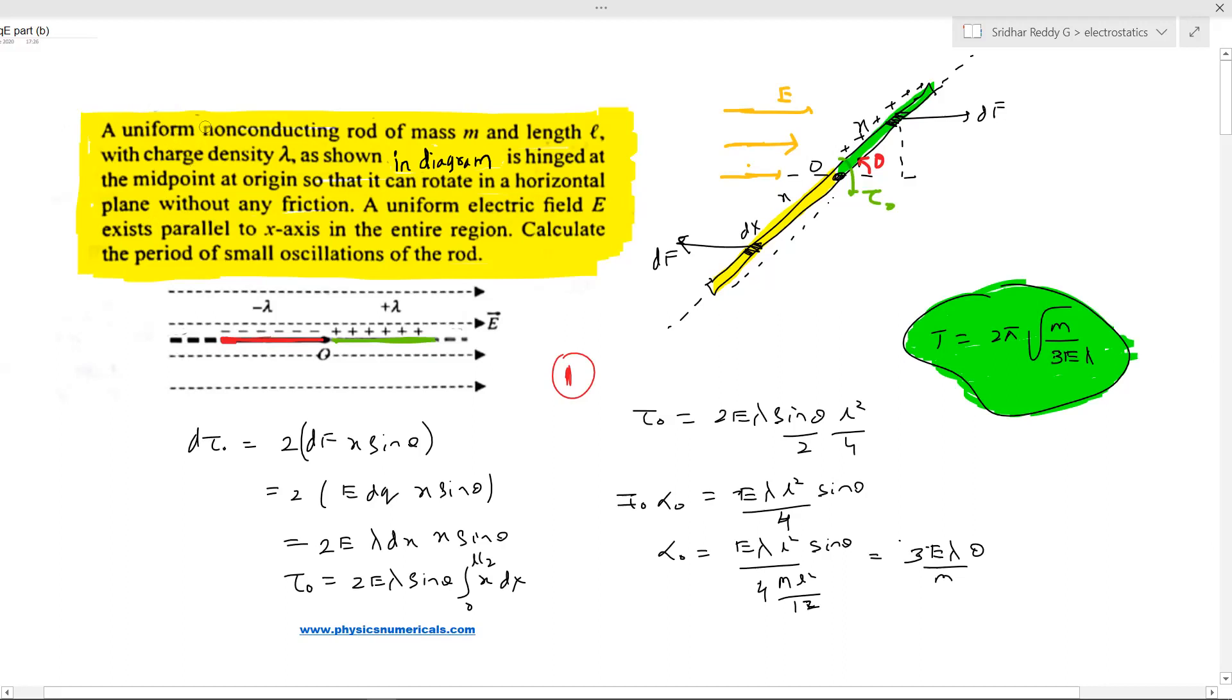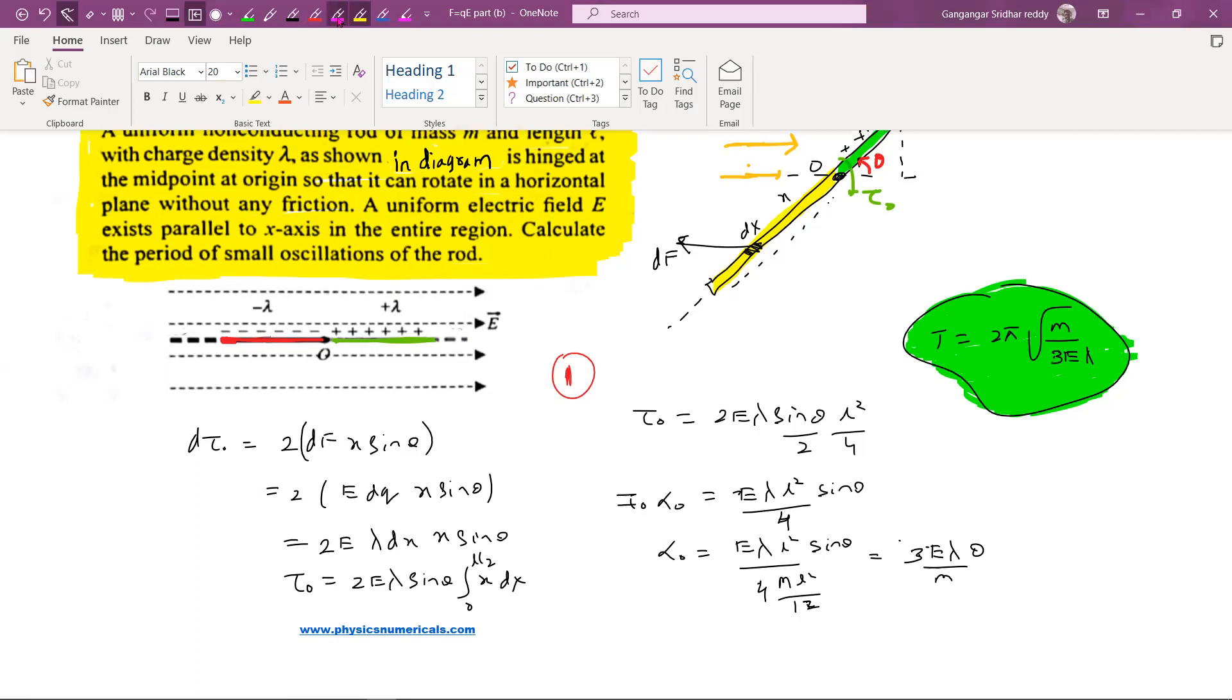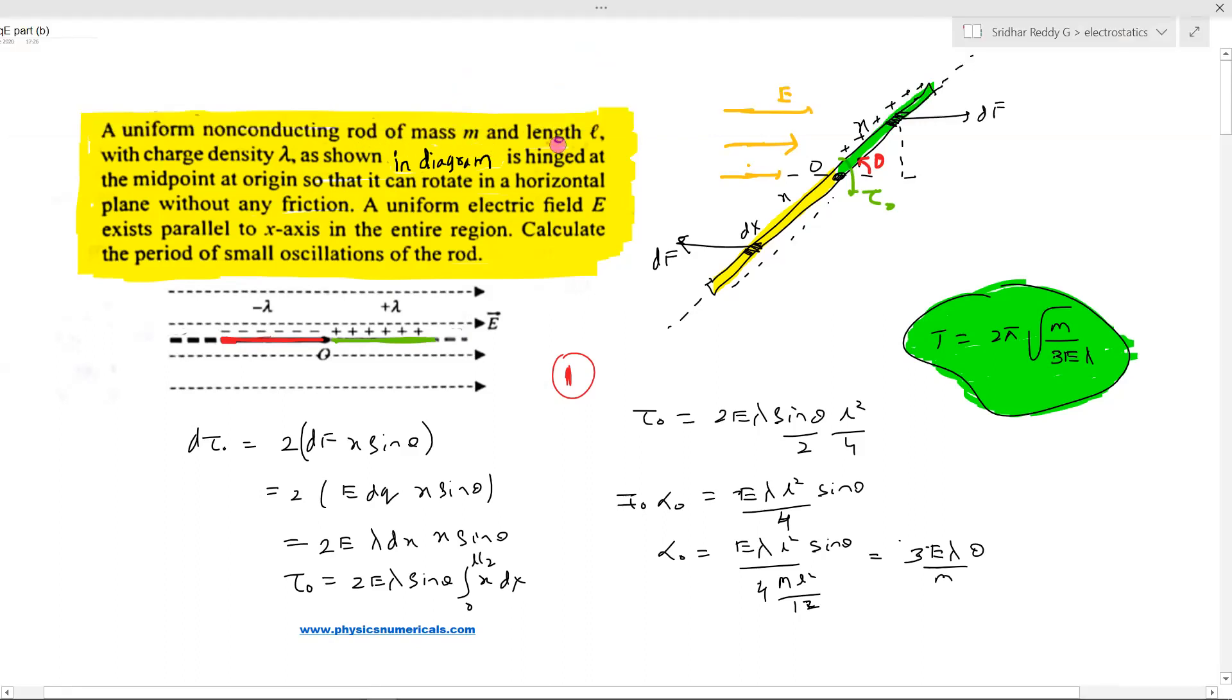The problem we have here: a uniform non-conducting rod of mass m and length l with charge density λ as shown in the diagram. One end of the rod is positively charged, the other end is negatively charged. Half of the length of the rod is positively charged, the remaining half is negatively charged.